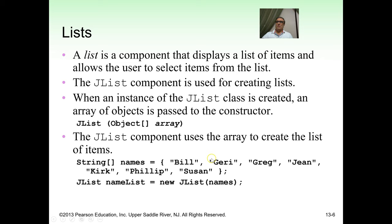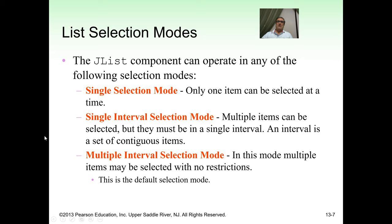The names array contains: Bill, Jerry, Greg, Gene, Kirk, Philip, Susan. Then you write: JList nameList = new JList(names).